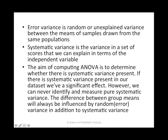Error variance is random or unexplained variance between the means — the variance of samples drawn from the same population. Systematic variance, on the other hand, is variance in a set of scores that we can explain in terms of the independent variable. The aim of computing ANOVA is to determine whether there is a systematic variance present in the data set.